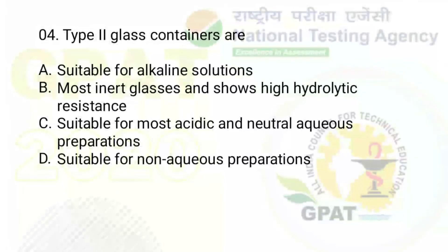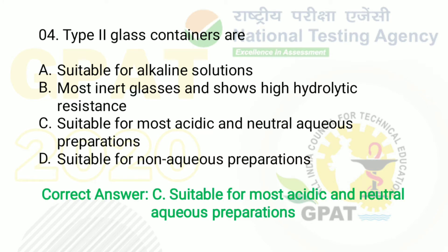The next question: Type 2 glass containers are. Option A: suitable for alkaline solutions. Option B: most inert glasses and show high hydrolytic resistance. Option C: suitable for most acidic and neutral aqueous preparations. Option D: suitable for non-aqueous preparations. The right answer is option C — suitable for most acidic and neutral aqueous preparations.